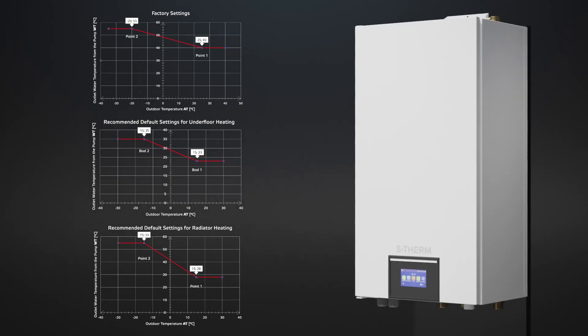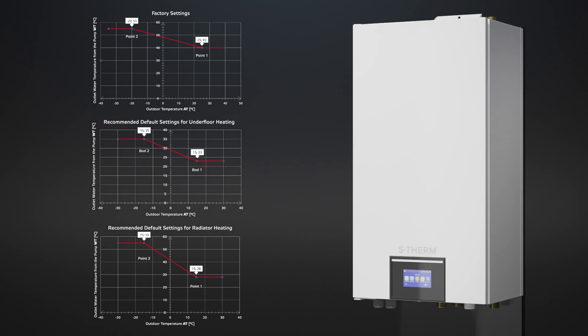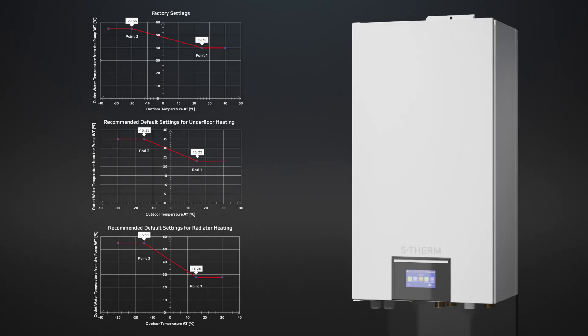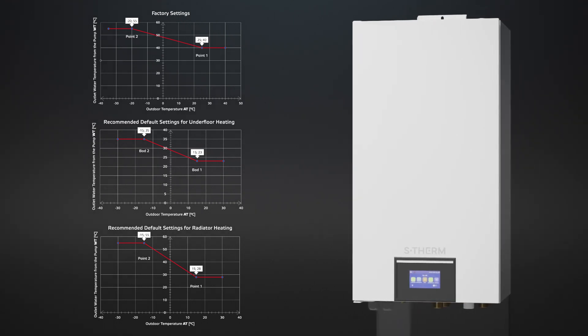Record the heating water temperature, the temperature in the building, and the outdoor temperature. Then set the curve based on these notes. Here you can see the possible default setting.